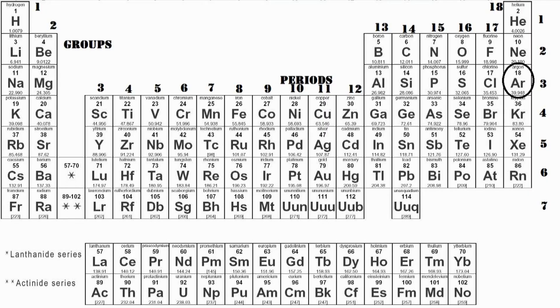Let's use argon as an example. Argon would be in column 18 and in row 3. Groups on the periodic table are also what is known as families.